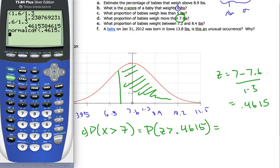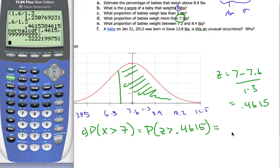comma, off to infinity, a big number. So, throw a bunch of nines down there. And I get a probability of 0.322. So, the proportion of babies weighing more than 7 pounds.